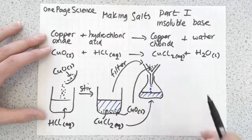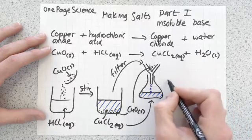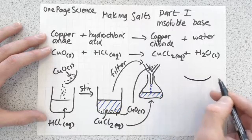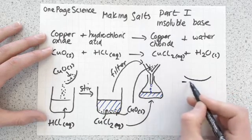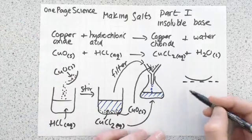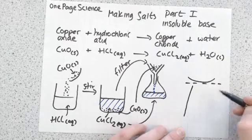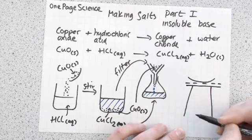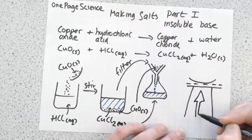What we've now got to do is we want the copper chloride as a solid, not as a solution, so we have to take this mixture and evaporate it. To do that we need an evaporating dish on top of a gauze on top of a tripod. We'll have a Bunsen burner which is going to provide the heat.